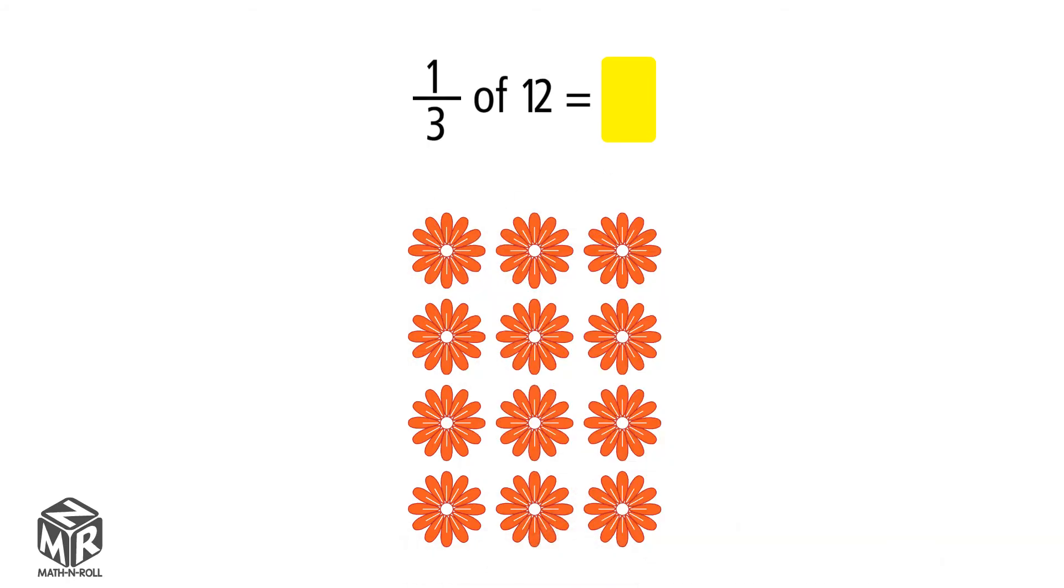Let's circle equal groups and count the number of flowers in one group. There are four flowers in one group, so one-third of 12 equals 4.